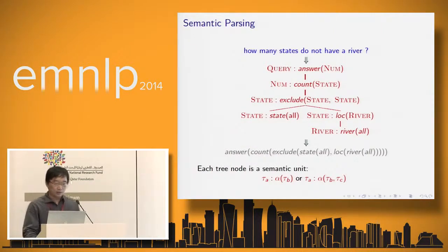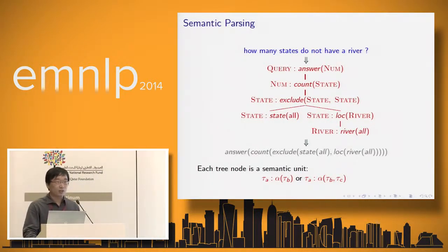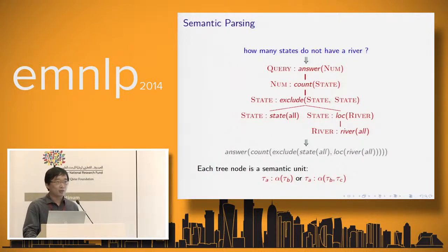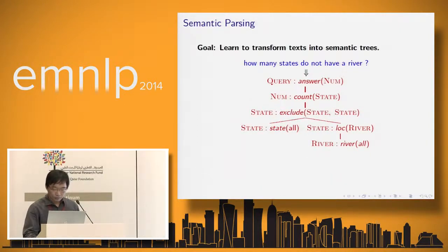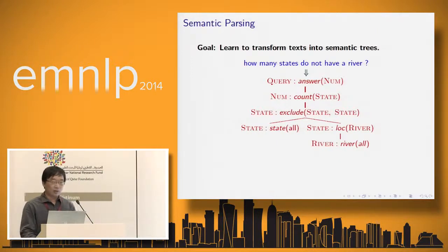Here we have an example taken from our training set. We have a sentence paired with a complete semantic representation. This semantic representation has a tree-structured form, and each node is called a semantic unit. You can convert this tree representation into a logical form, which can interact with other components to perform interesting tasks. Our goal is to learn a model that can transform text into this semantic representation.